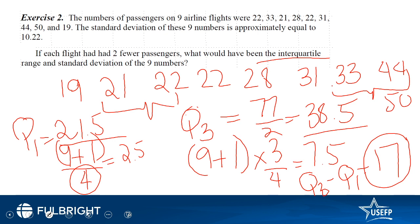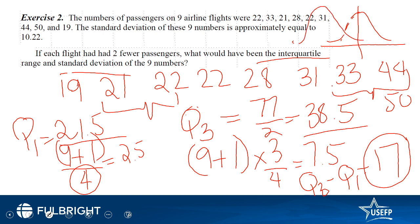What about the standard deviation? If everything decreases by two and we draw the distribution, it is a normal distribution with a certain mean. If everything decreases by two, the curve only shifts two places back — the shape remains the same. Therefore, the standard deviation of 10.221 remains unchanged.